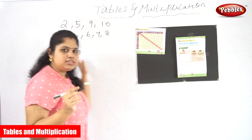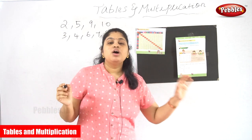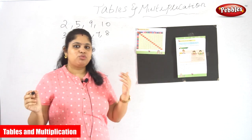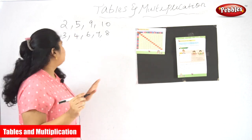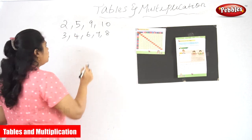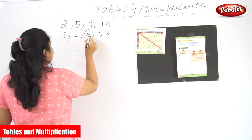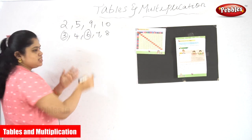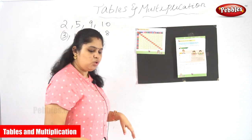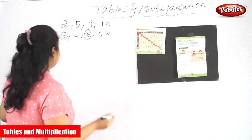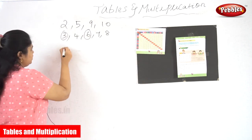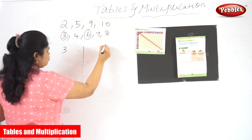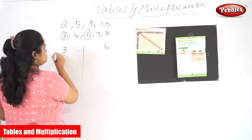So in this next table, what we are going to learn means we are going to learn the 6th table and the 3rd table — 3 and 6. Next we are going to see. So I'm just writing the 3 tables; this is for the 6 tables.